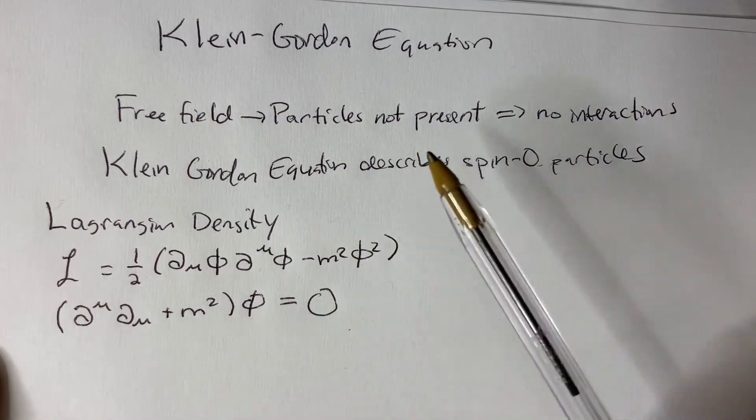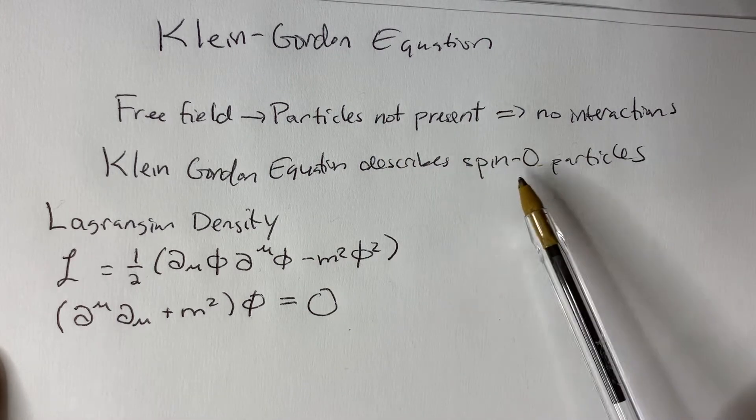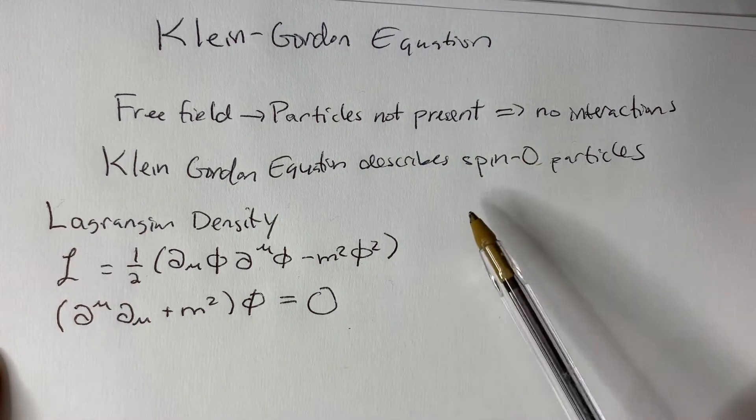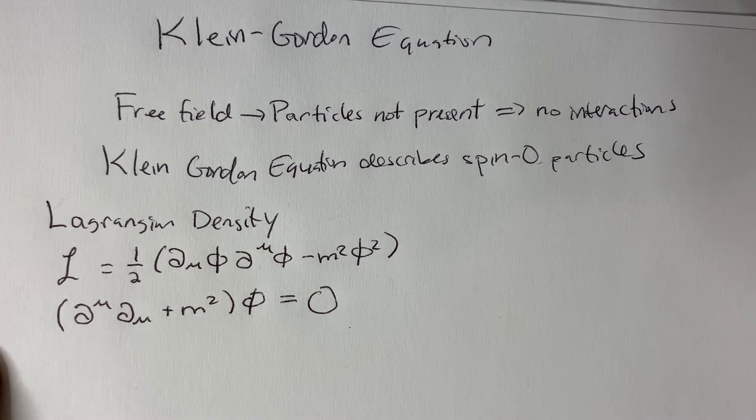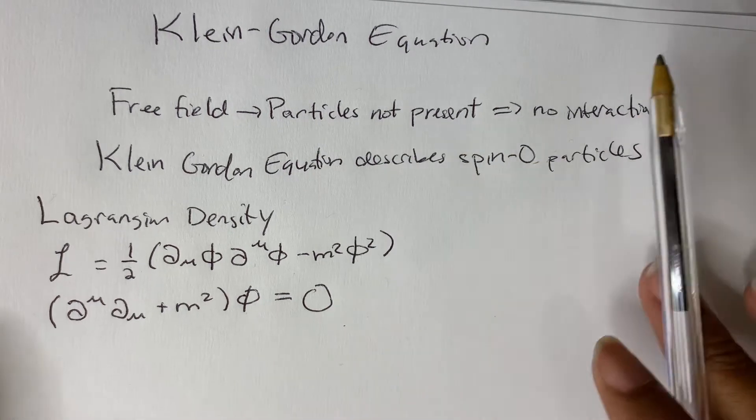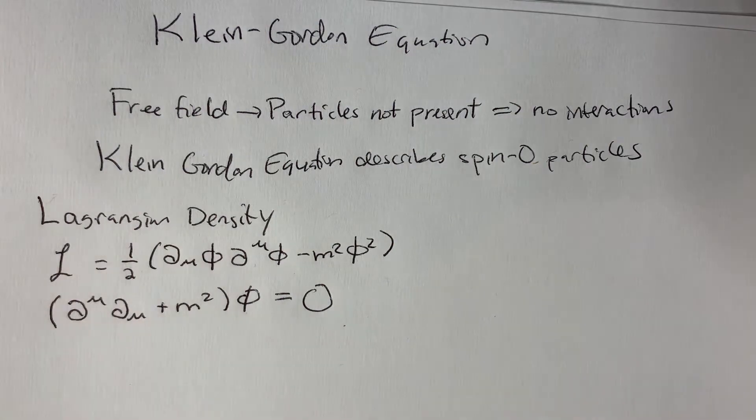In the Klein-Gordon equation, remember that it describes spin zero particles. For spin one-half particles, we need the Dirac equation, which we will be solving in the next video. But for now, just spin zero particles, field with no interactions.